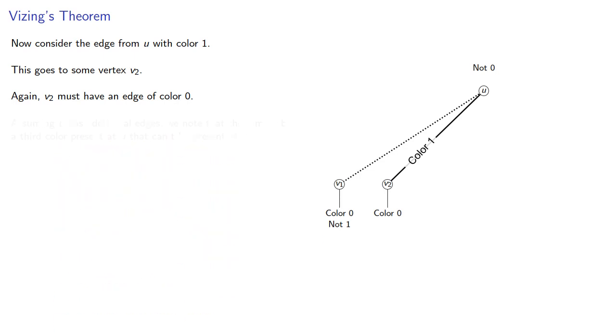And assuming that u has additional edges, we note that there must be a third color present at u that can't be present at v2. And in a fit of creative inspiration, we'll call this color 2, which is assigned to the edge uv3.